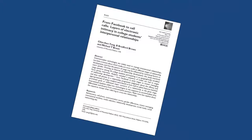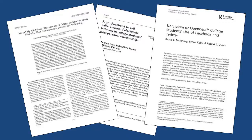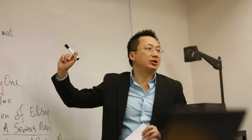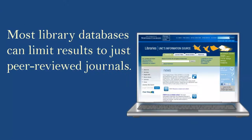When you find an article to use in your research, how do you determine if it is from a peer-reviewed journal? Many professors will assign papers and research projects that require you to find and use only articles from peer-reviewed journals. There are, essentially, two ways to determine if an article is from a peer-reviewed journal.